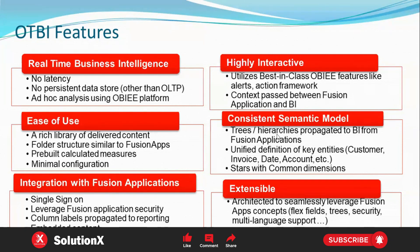The consistent semantic model includes trees and hierarchies propagated to OTBI from Fusion Applications, with unified definitions of key entities like customer, invoice, state, account, and so on. Common dimensions were available before release 19D but were removed after 19D. The extensible architecture seamlessly leverages Fusion Apps concepts like flex fields, security, and multi-language support. For security, job roles are assigned for subject areas in OTBI, similar to how they work in Fusion.